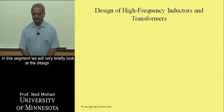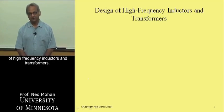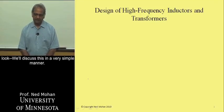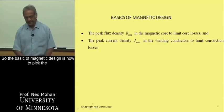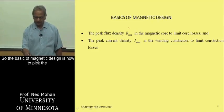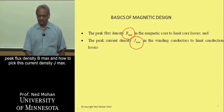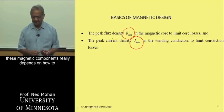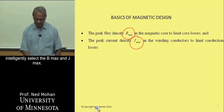In this segment, we will very briefly look at the design of high-frequency inductors and transformers. This can be a large topic by itself, but we will discuss this in a very simple manner. The basics of magnetic design are how to pick the peak flux density, Bmax, and how to pick the current density, Jmax. A lot of the discussion in designing these magnetic components really depends on how intelligently to select Bmax and Jmax.